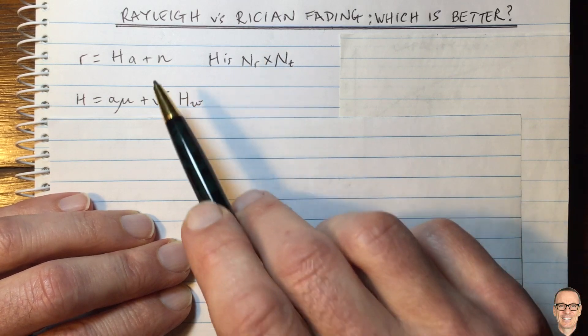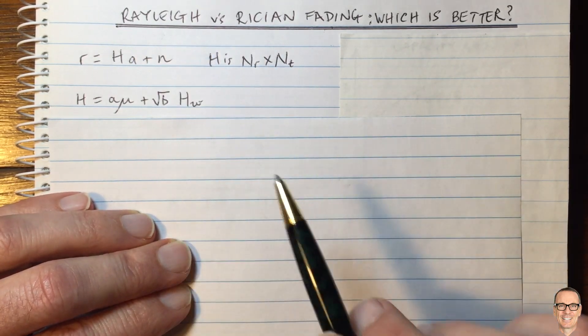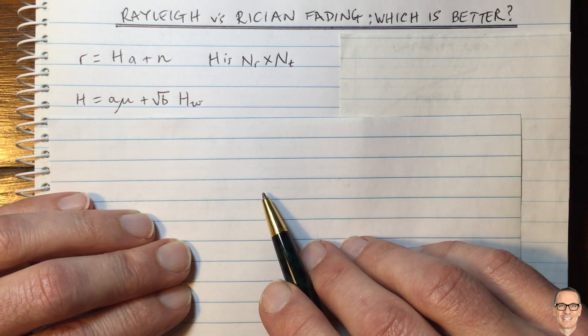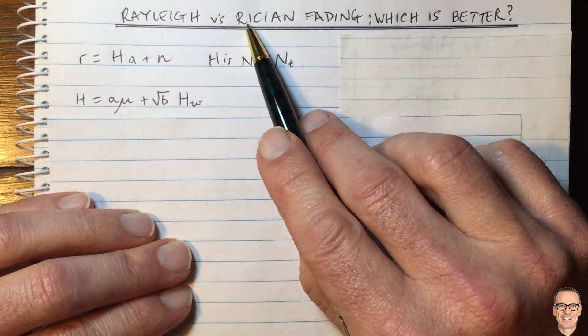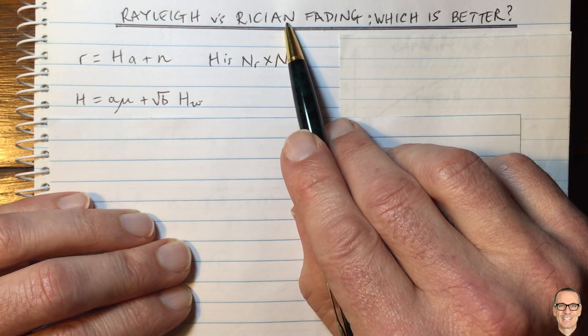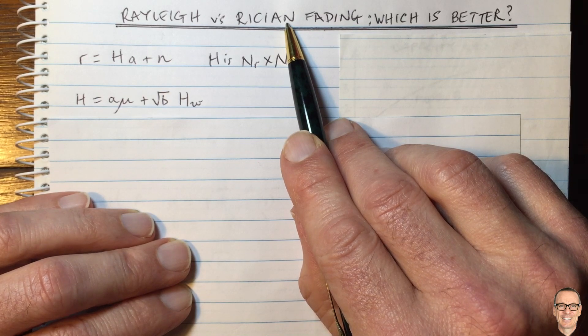And I've often heard people say that you need lots of rich multi-path in MIMO channels in particular to get effective communications, and that Rician, with the dominant path, does not have those multiple paths to the same degree.